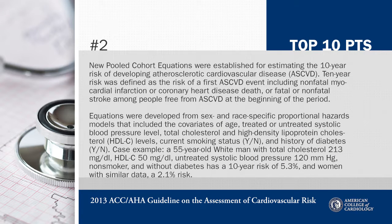The second point is that the new pooled cohort equations for estimating atherosclerotic cardiovascular disease risk were developed from sex and race-specific proportional hazard models. These included covariates for age, treated and untreated systolic blood pressure, total cholesterol and HDL, current smoking status, and a history of diabetes.